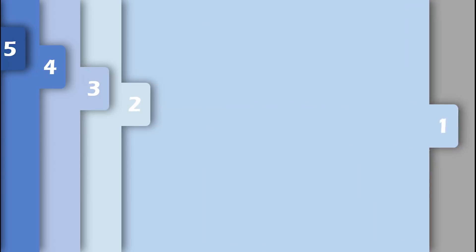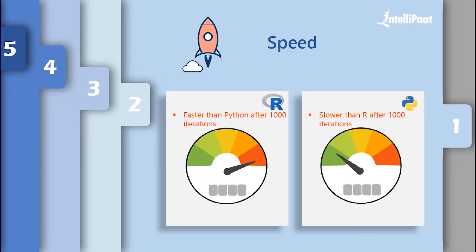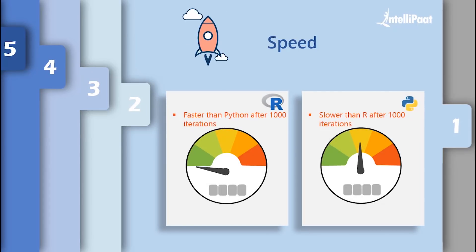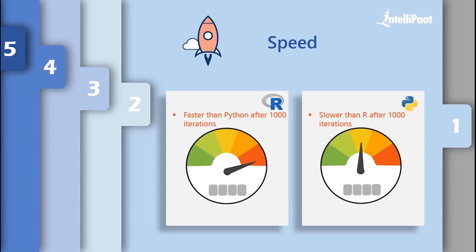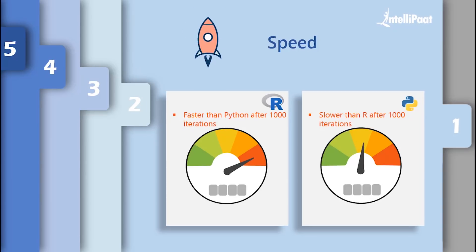When it comes to speed, Python is faster than R only up to a thousand iterations. But after a thousand iterations, R starts using the lapply function, which increases its speed — in that case R becomes faster than Python. So both have their own advantages.